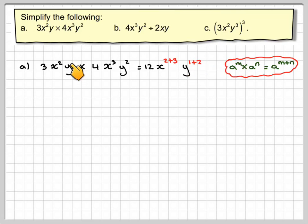We've got a power here. There's no power. It's always to the power of 1. So that becomes 12, x to the power of 5 and y cubed as the final answer.